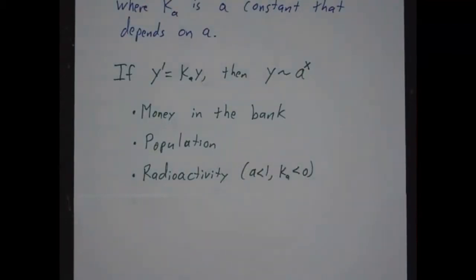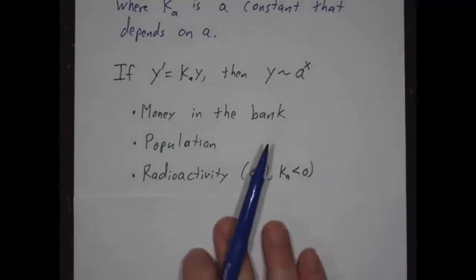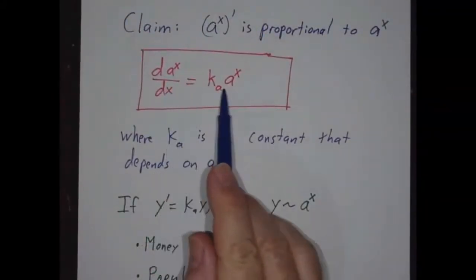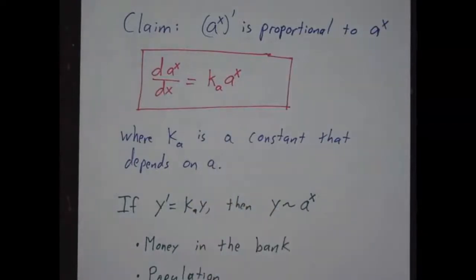And radioactivity, where the rate at which atoms disappear is proportional to how many are there. Now in this case, a is less than 1 and the constant is negative, but the idea is still the same. Whenever you have an exponential, the derivative is a constant times the exponential itself.